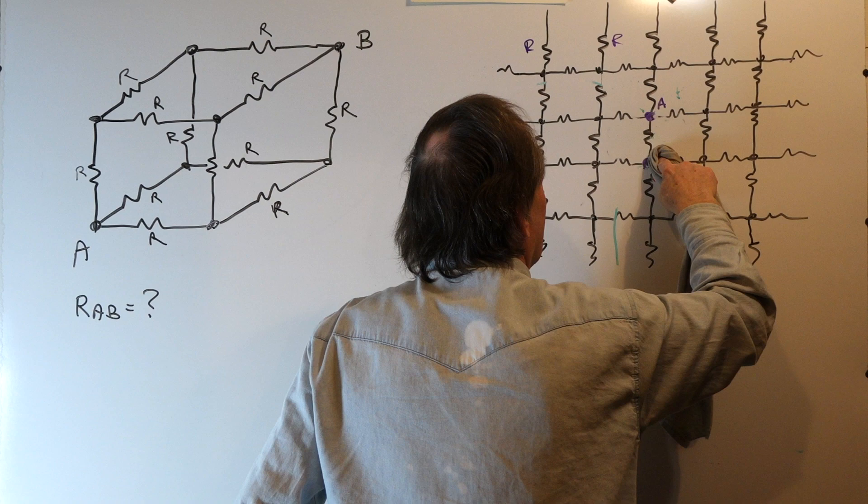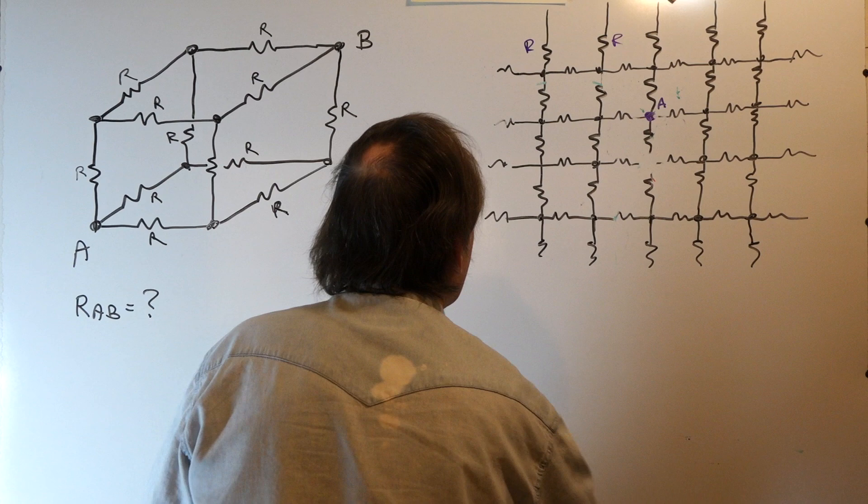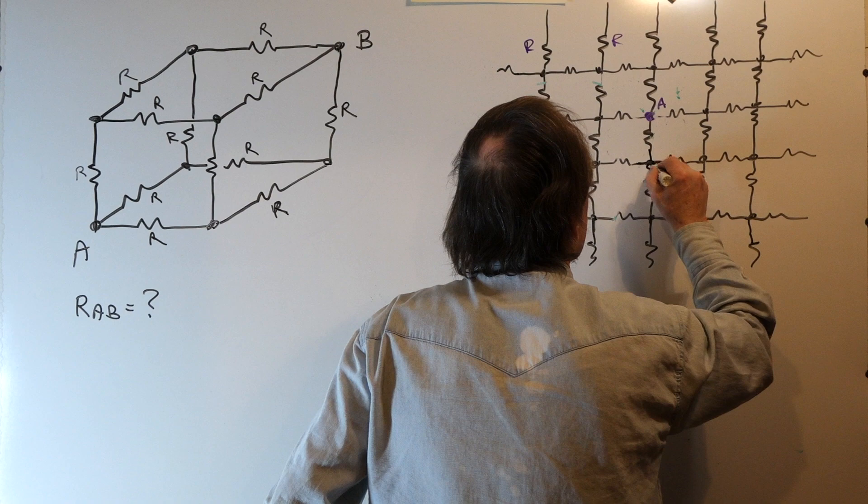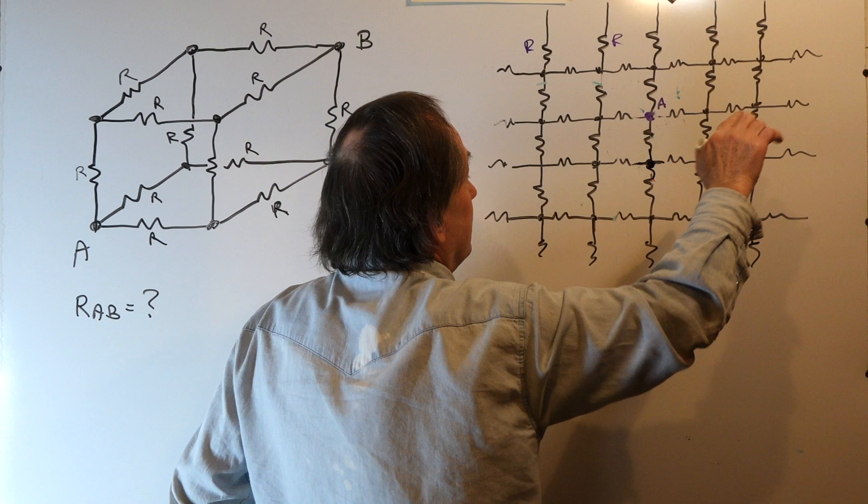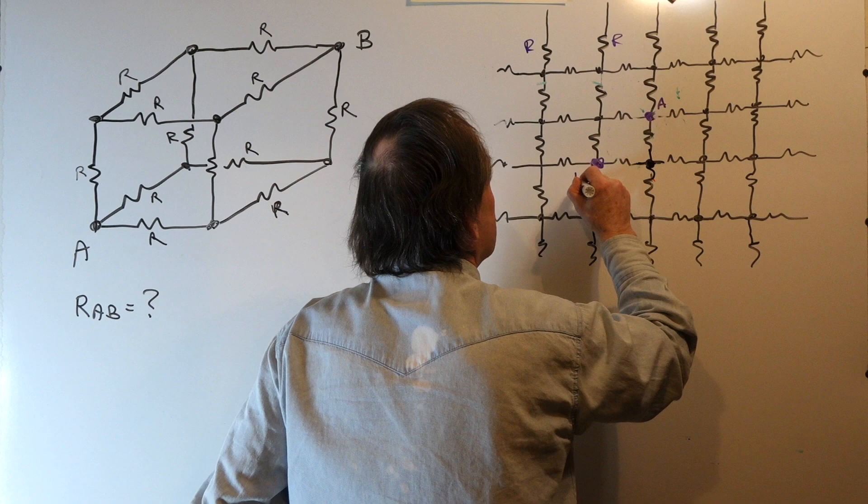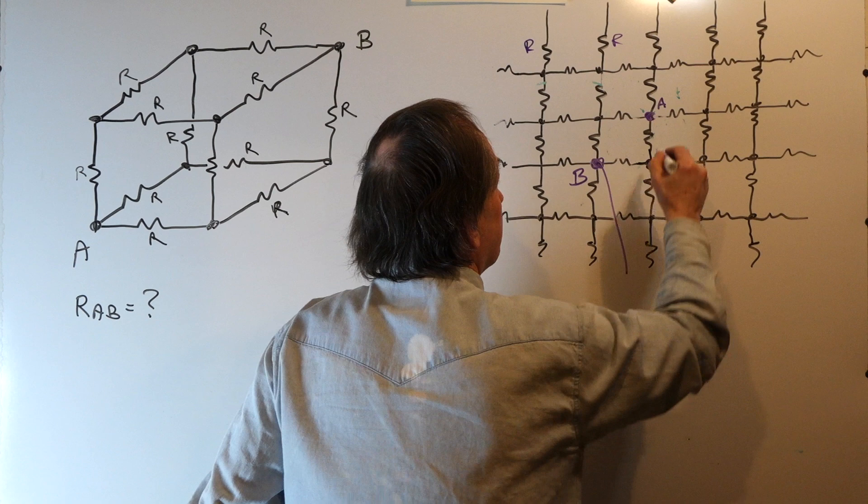So what we have going here is this: all resistors, again, are the same. It's an infinite network, and what I want you to do is find the resistance between node A and B, which are diametrically opposed. So we want to find the equivalent resistance looking in there.